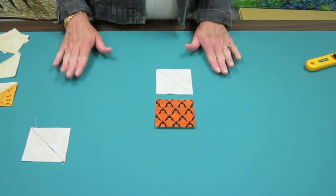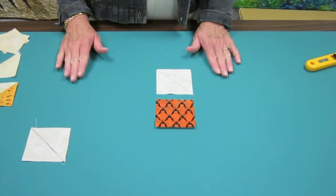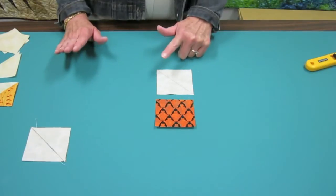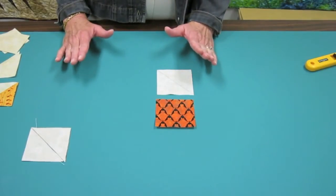Okay, so you've started off cutting squares that are three and an eighth. The directions tell you to draw a line from corner to corner on the background. And if you've been quilting for a while, you know that upon occasion,